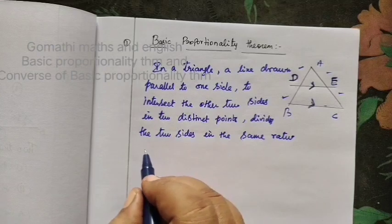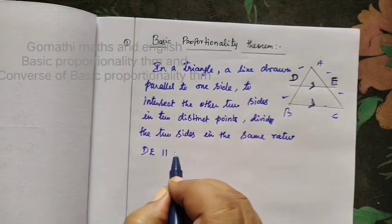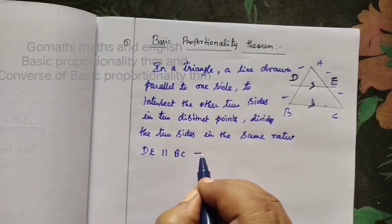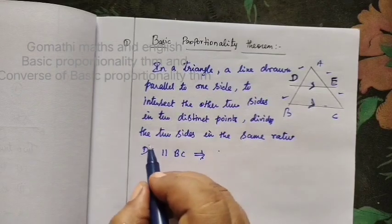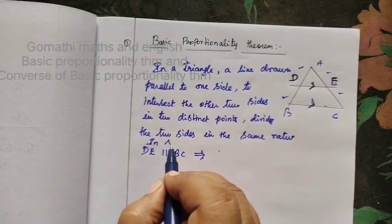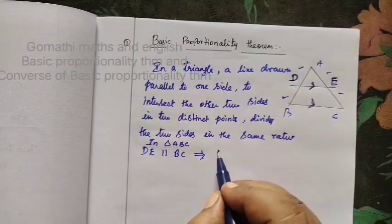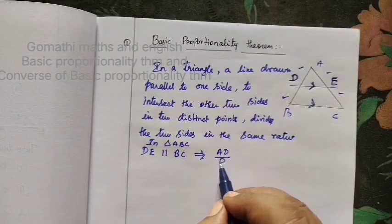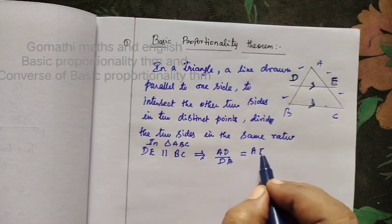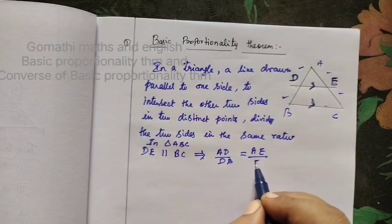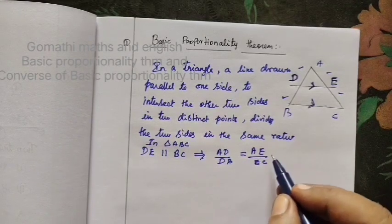So what is given? DE is parallel to BC. This implies, in triangle ABC, AD by DB equals AE by EC. This is the basic proportionality theorem statement.